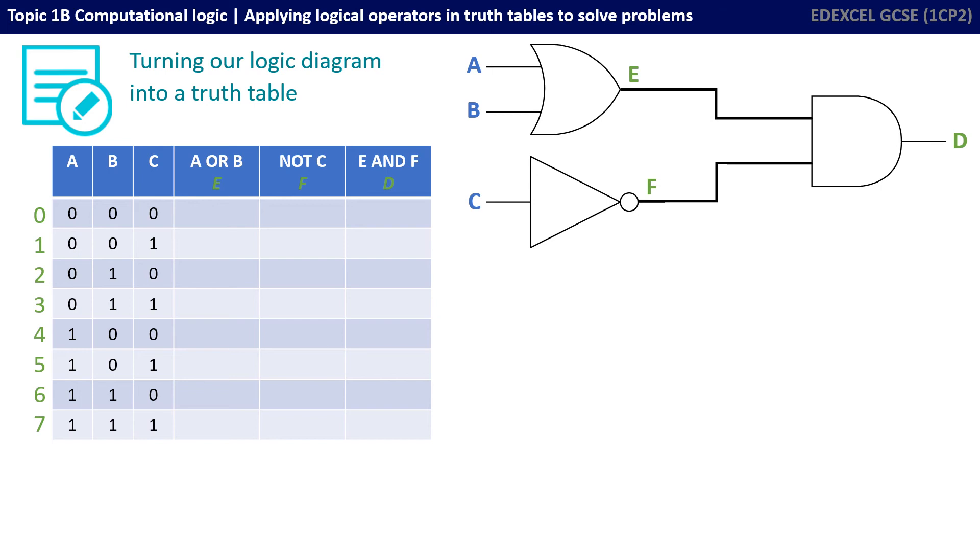As mentioned in a previous video, the easiest way to do this is to simply count up in binary. For the first row represents 0, that's 0, 0, 0. The second row is the number 1, 0, 0, 1, and then 2, 3, all the way up to 7, which is 1, 1, 1.